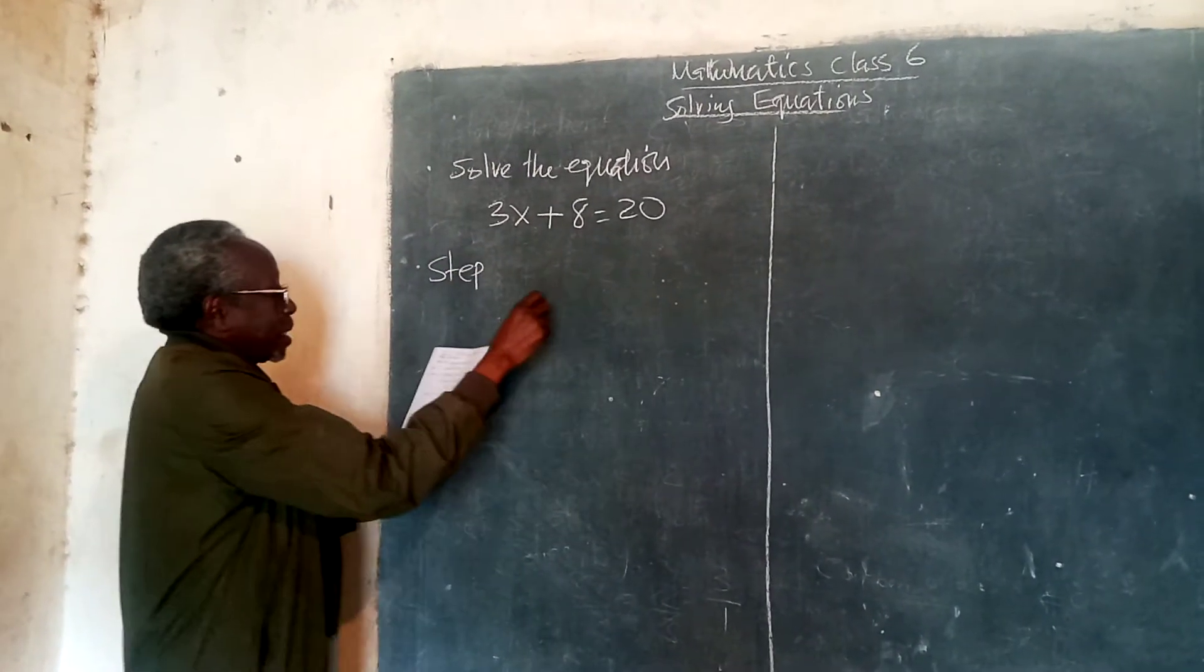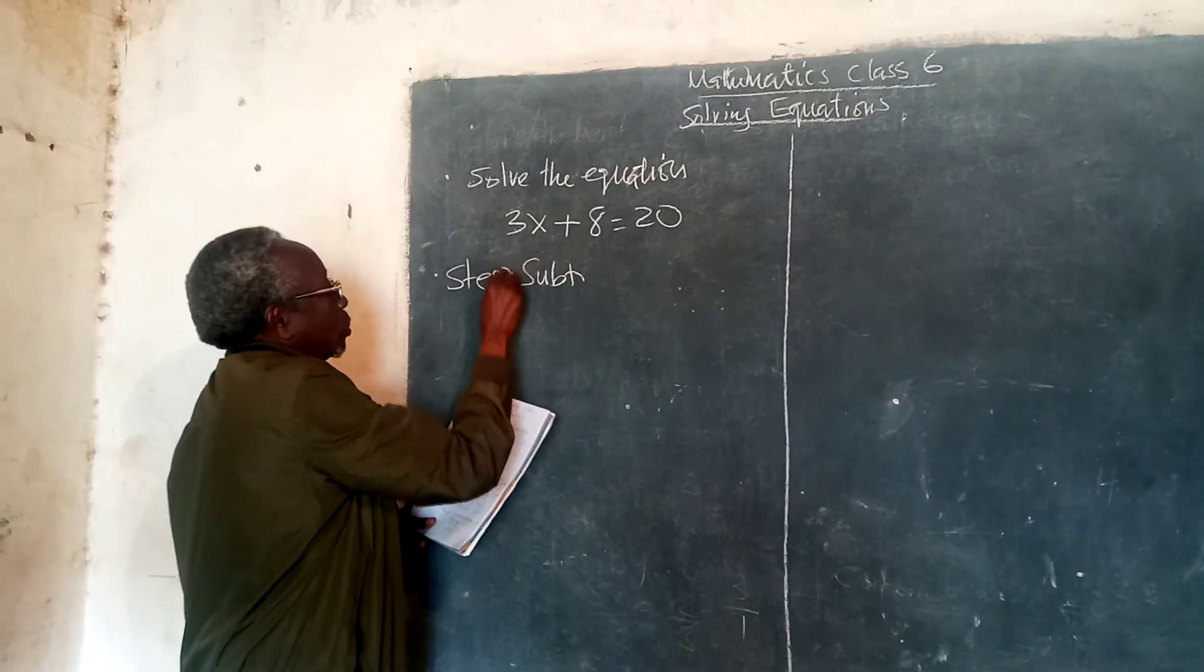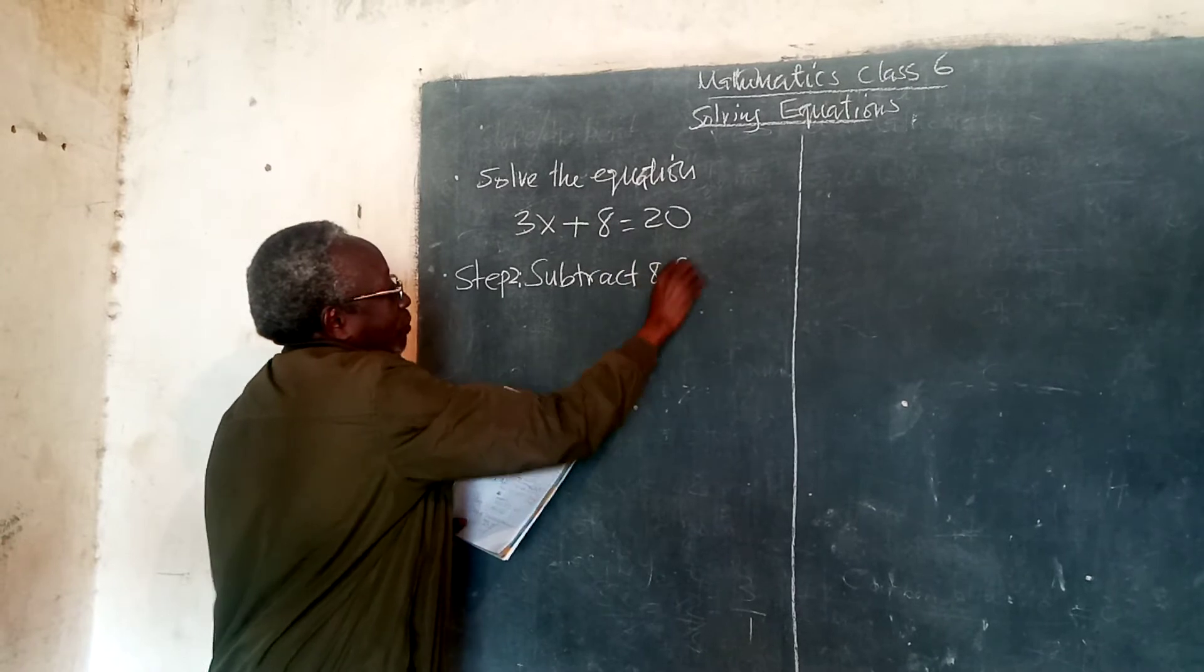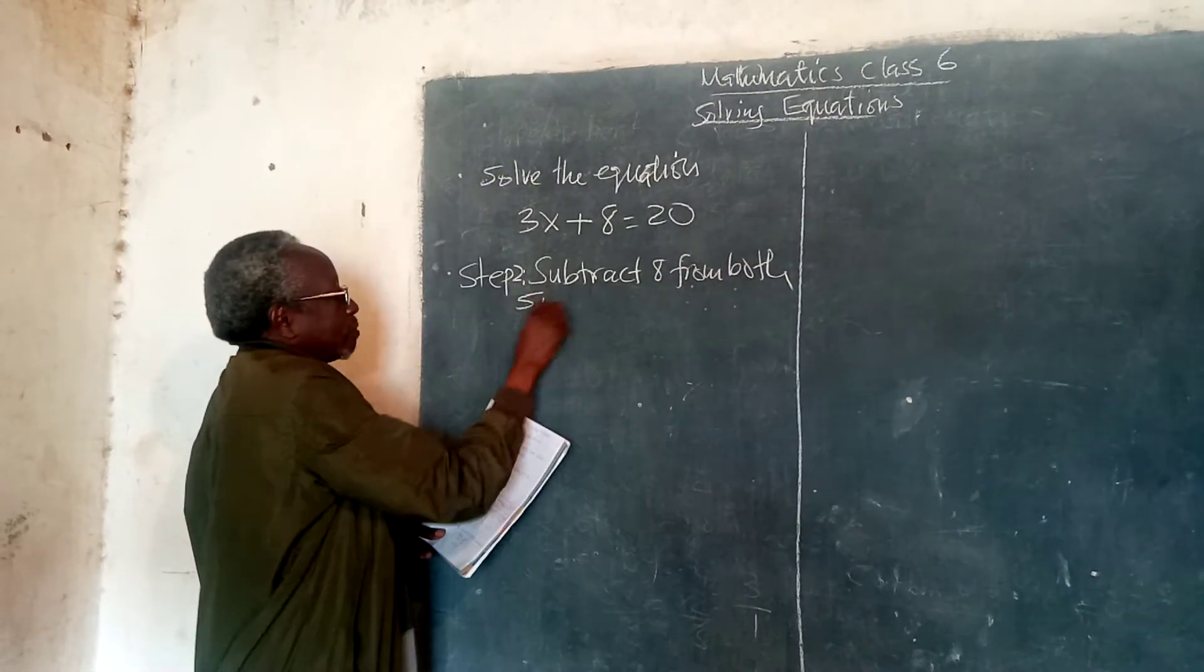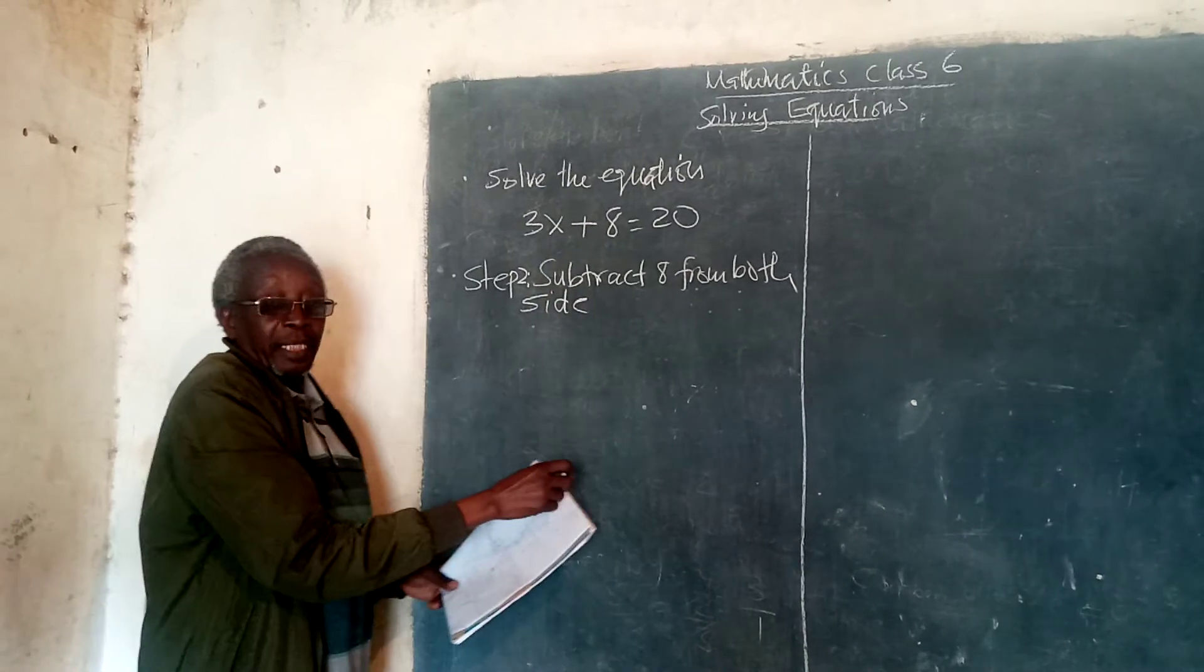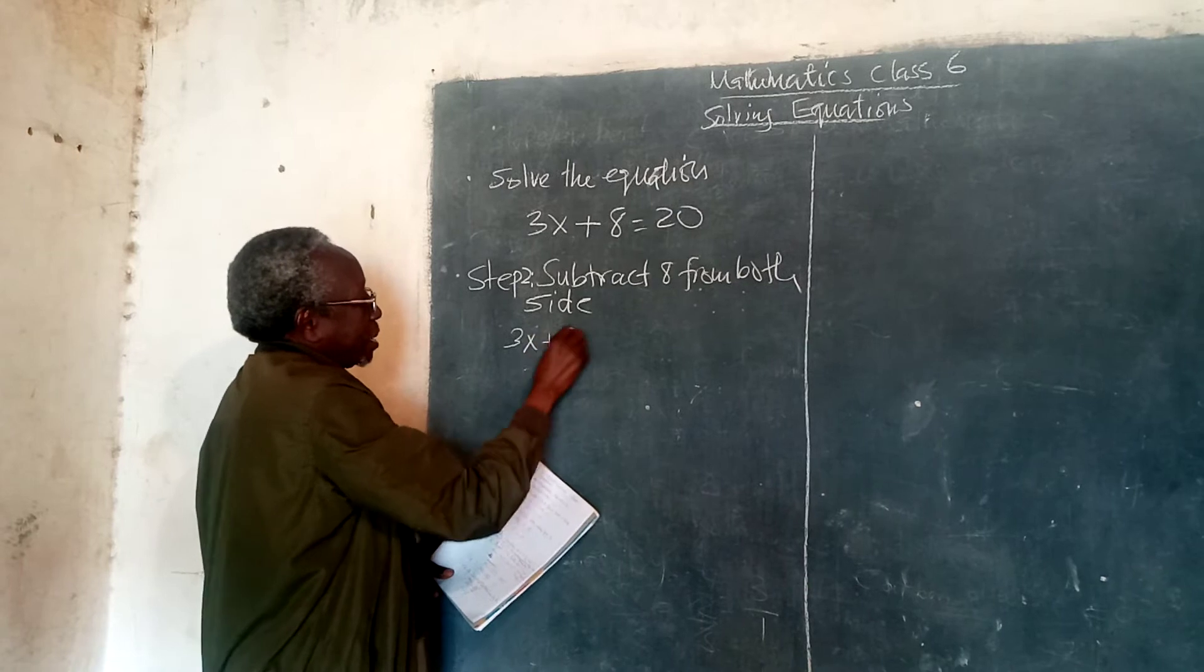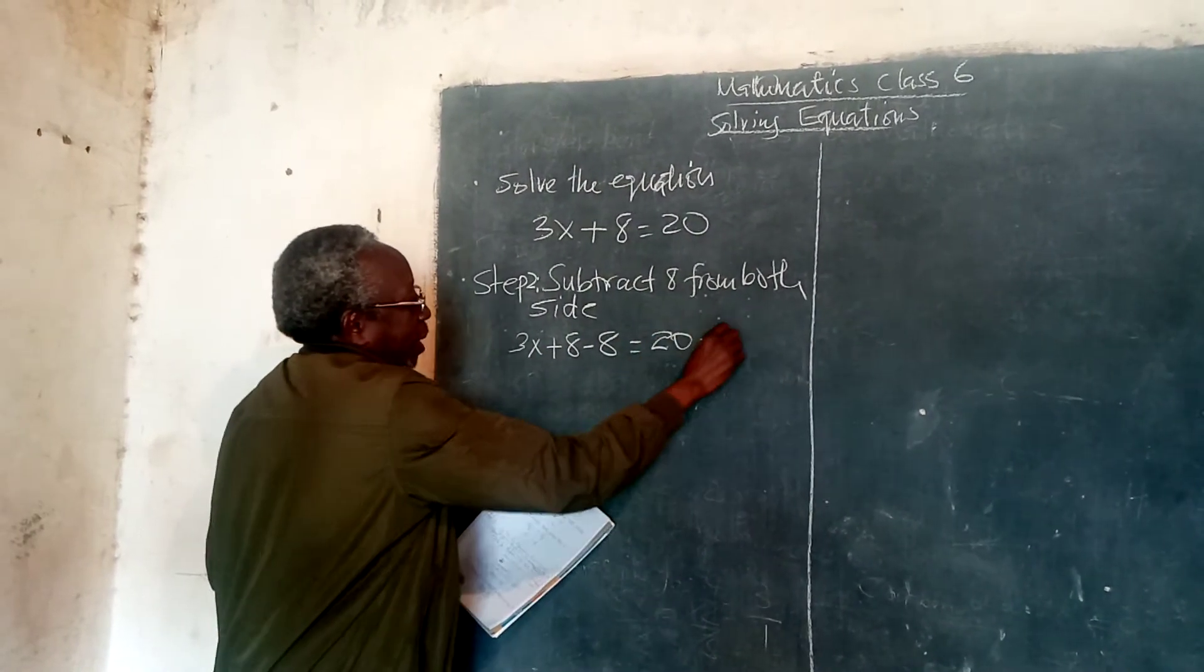Step 2, we say subtract 8 from both sides. And so, we write it here as 3x plus 8, we take away 8 is equal to 20, take away 8.